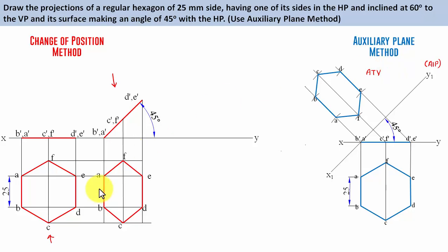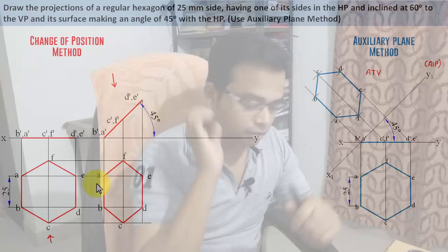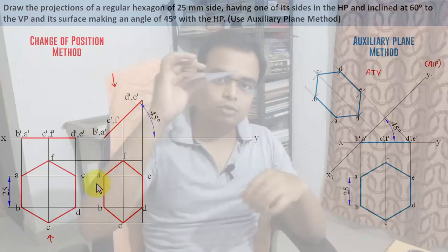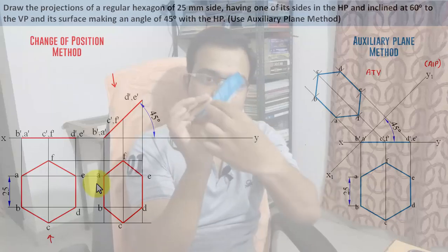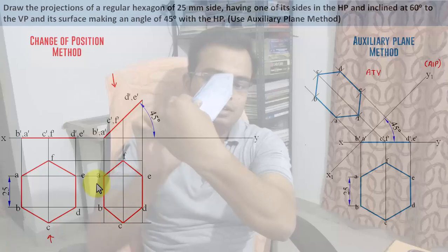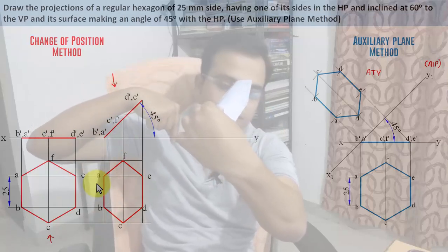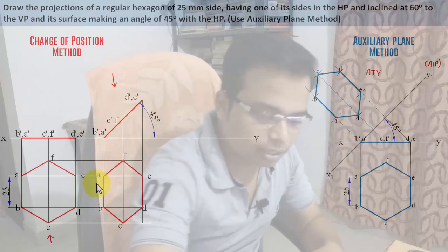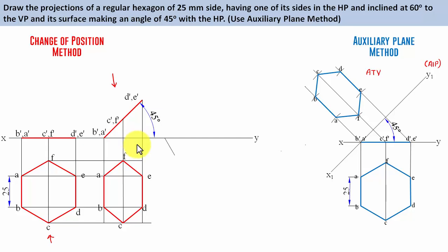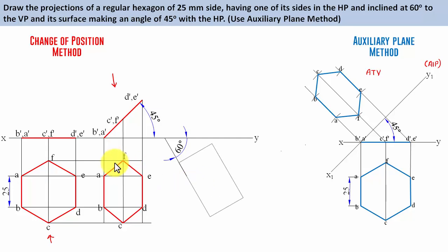Now for step three: the edge must be inclined at 60 degrees with the VP. To do this, first make a line at 60 degrees. Notice this top view is sort of a rectangle in which the hexagon is squeezed. We recreate this rectangle with the same dimensions at 60 degrees and fit the entire hexagon inside it, naming all the corner points.